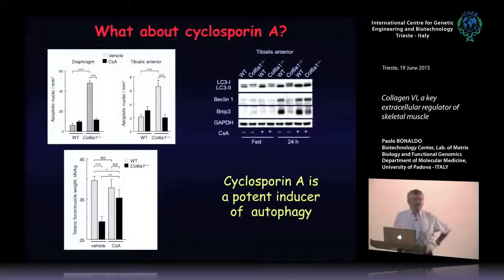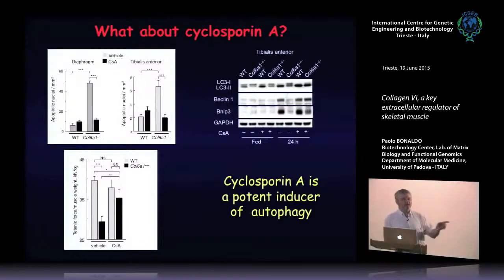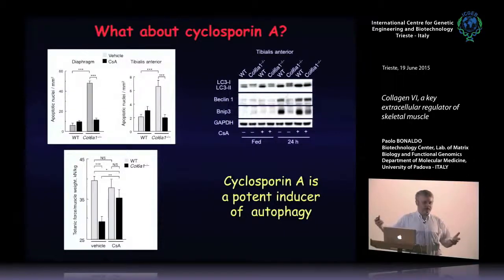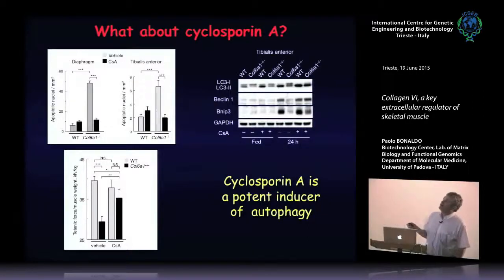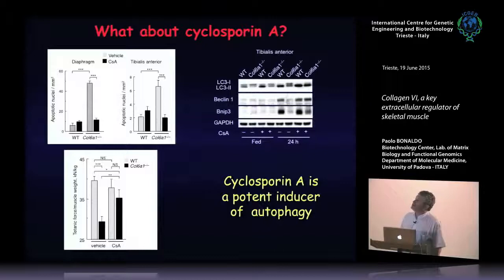You might wonder: before I told you cyclosporin A recovers structure, histology, and strength, and now autophagy does the same — are the two things related? We decided to check whether cyclosporin A affects autophagy. Nobody had ever investigated this. We found that cyclosporin A is surprisingly a very potent inducer of autophagy — so the benefits obtained with cyclosporin A are also related to the fact that this drug induces autophagy. It is more potent than the dietary intervention, but unfortunately as I said, it's immunosuppressive and not suitable for long-term therapy.